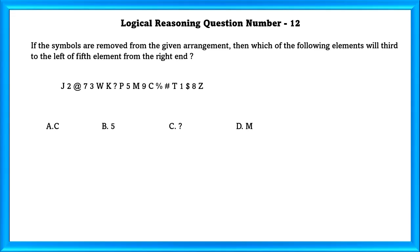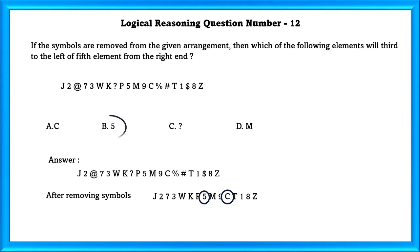Logical Reasoning Question Number 12. If the symbols are removed from the given arrangement, then which of the following elements will be 3rd to the left of the 5th element from the right end? If we remove all the symbols, we will get this. And the element 5th from the right end is C. And 3rd to the left of C is 5. So our answer is 5.